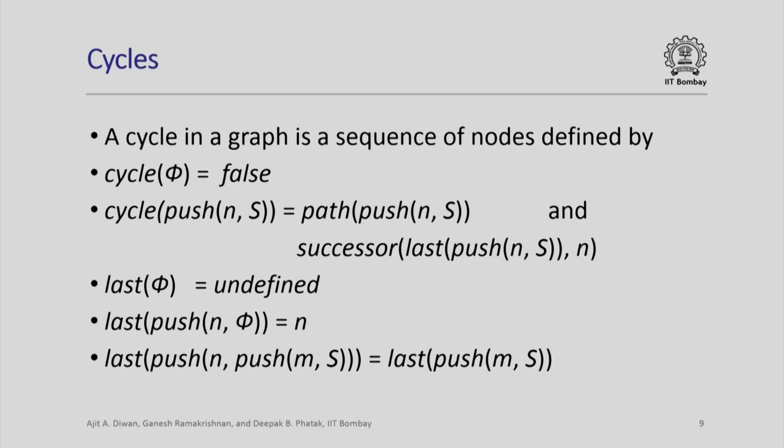Another very useful concept in a graph is that of a cycle. It is again a sequence of nodes defined similarly: the empty sequence is not a cycle. A non-empty sequence must satisfy all the properties of a path, with the additional condition that the first element of the sequence must be a successor of the last element. That is, last(push(n, s)) must be a successor of n, meaning the sequence wraps around. The last function returns the last element in a sequence, and is undefined for the empty sequence.